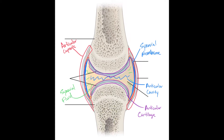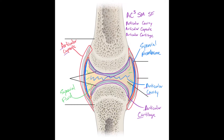Those are the five components of a synovial joint. A way to remember them is by this formula: AC cubed, SM, SF. Articular capsule is AC, articular cavity is AC, and articular cartilage is AC — so you have AC cubed. After that you have synovial membrane and synovial fluid. That's how I remember the five components: AC cubed, SM, SF.